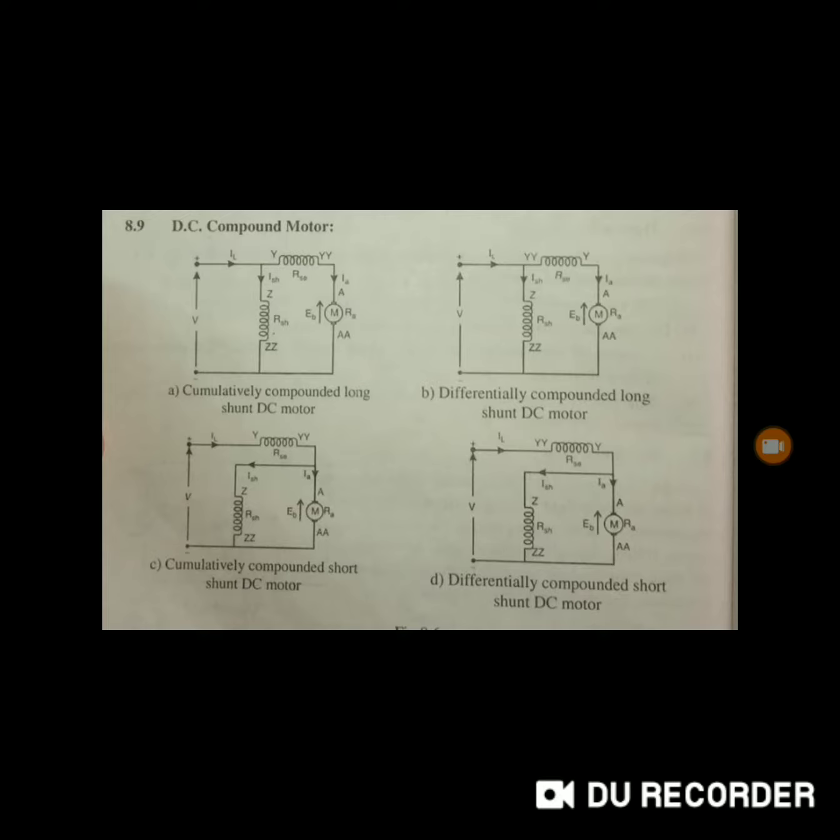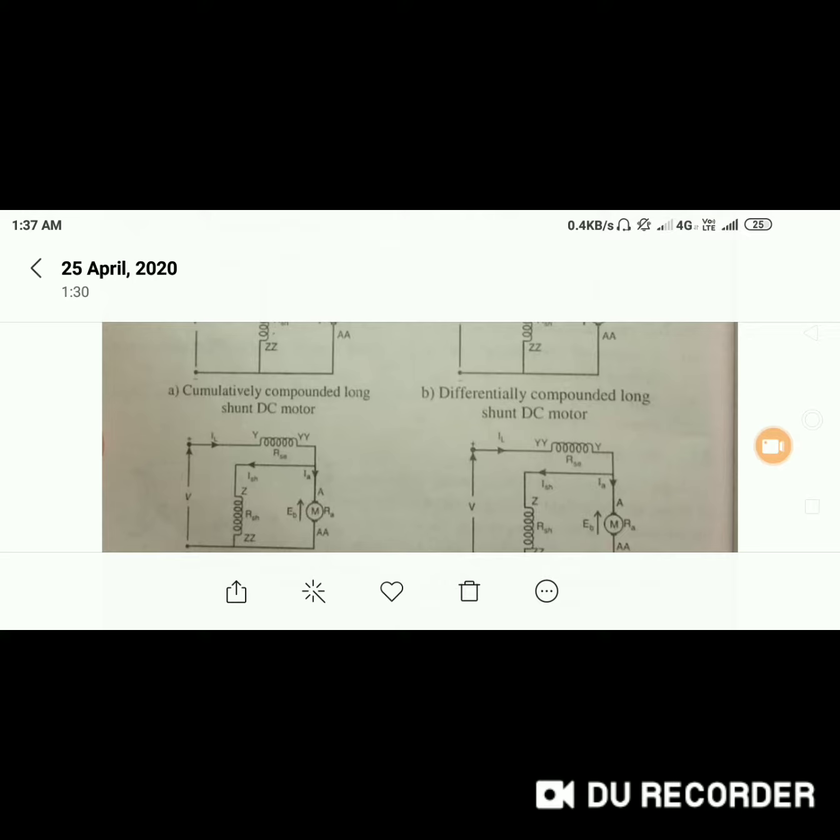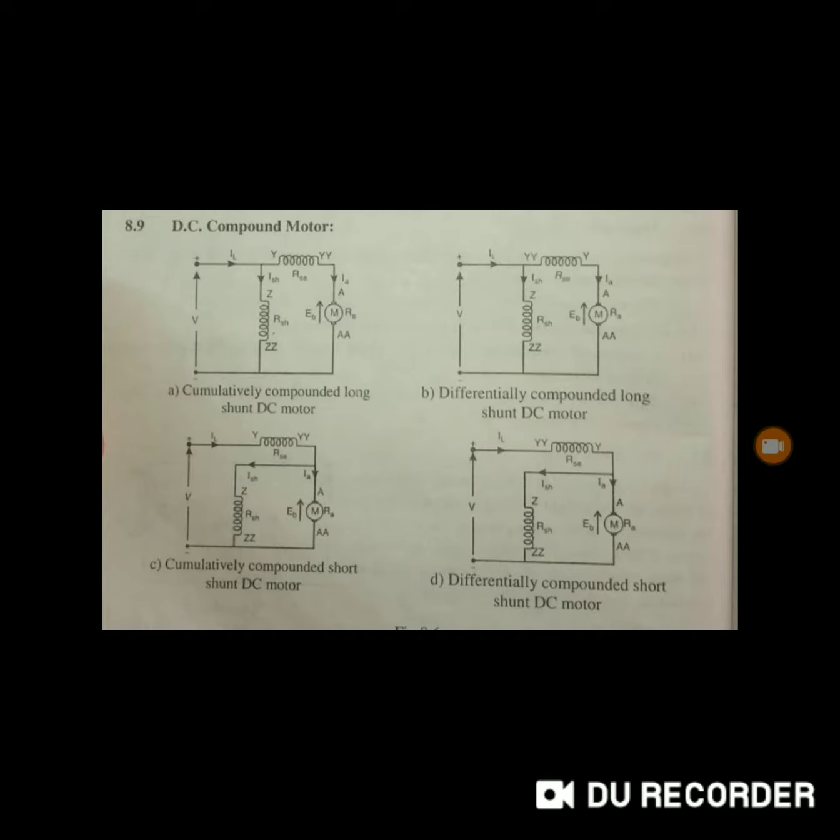These two are again divided into two types: long and short shunt. In the cumulative, the current enters the positive terminal of the series field winding and current I_SH enters the positive terminal of the field winding. Hence flux produces in the same direction.